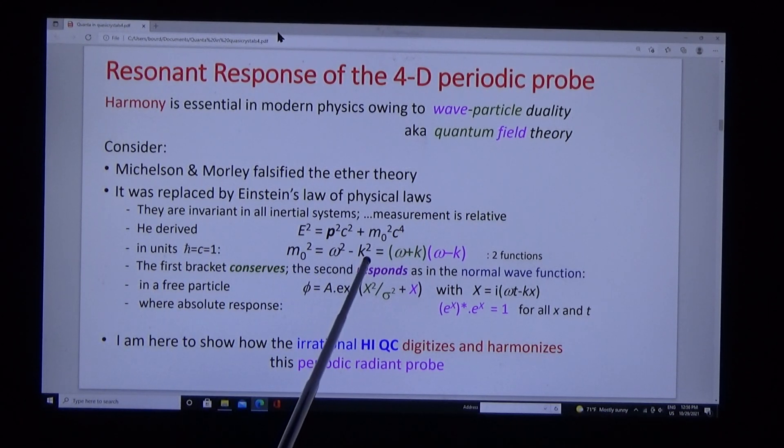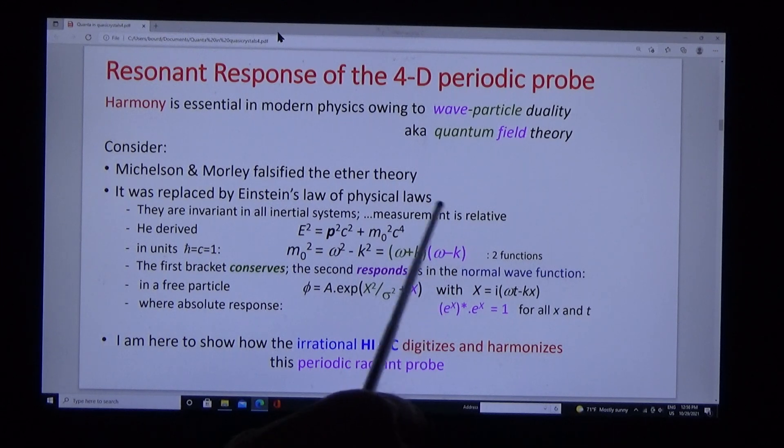We move on to Einstein's discovery in relativity. This is a formula which we rewrite in simplified units: m squared equals omega squared minus k squared, which we break down into two functions. One is conservative—energy, momentum, mass, electronic charge, etc.